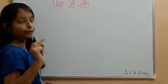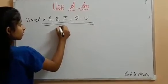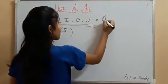So where is An? Our An is used where there are vowels, and vowels are 5. So with these 5 vowels we will use An.